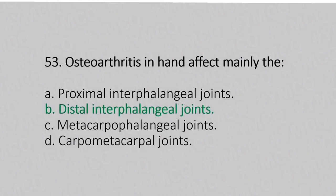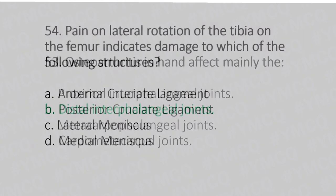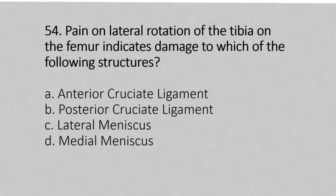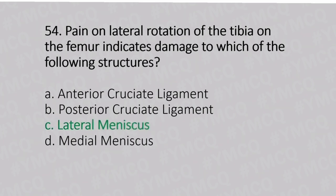Now let's move to question number 54. Bending on the lateral rotation of the tibia on the femur indicates damage to which structure? Option A: anterior cruciate ligament. Option B: posterior cruciate ligament. Option C: lateral meniscus. Option D: medial meniscus. And the answer is Option C, lateral meniscus.